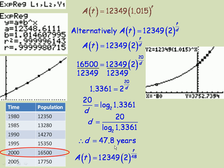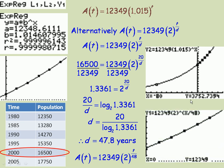So then a slightly different model, still exponential, would be the amount or the population after time t is 12,349 times 2 to the power of t over 48. And so notice what I did was I put the 48 in place of d here.